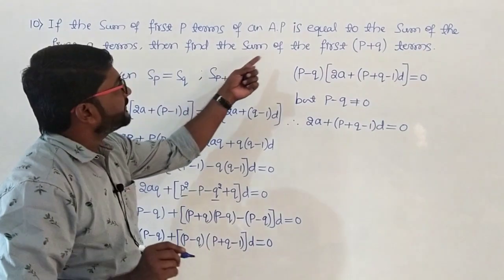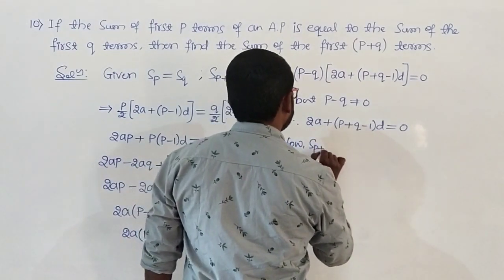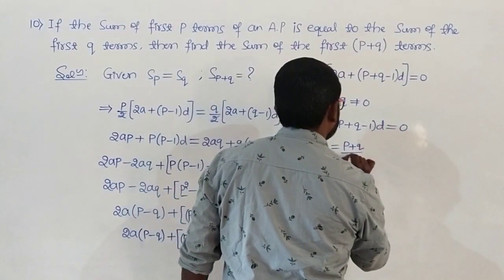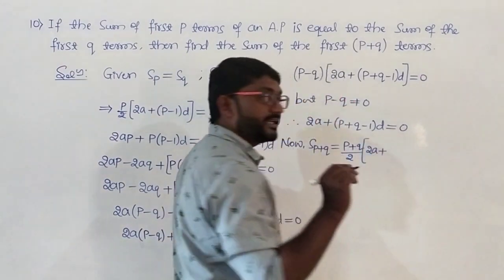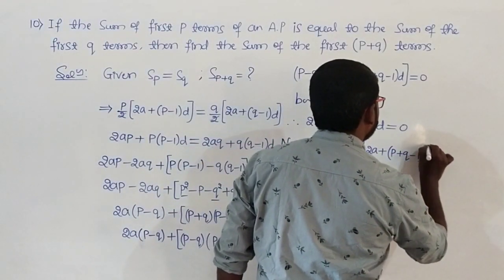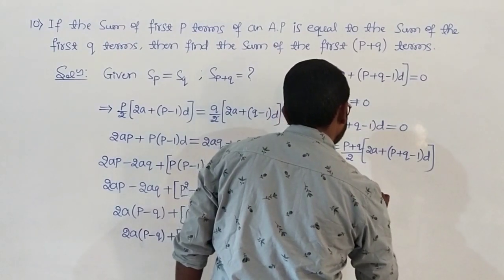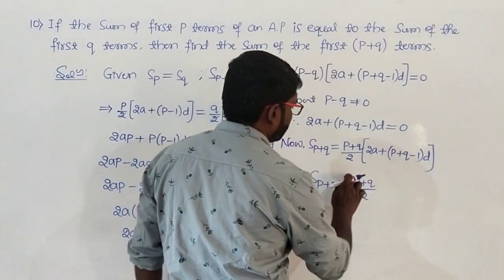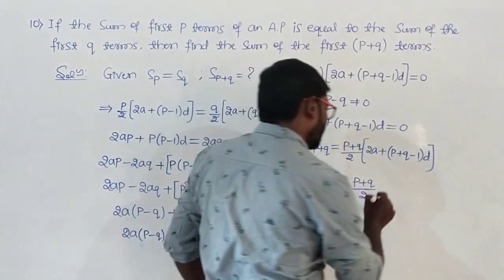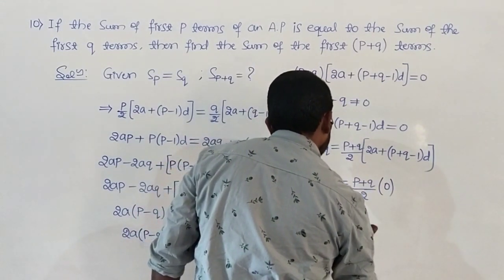Now we find the sum of the first p plus q terms. S of p plus q equals p plus q divided by 2 into 2a plus p plus q minus 1 into d. But 2a plus p plus q minus 1 into d is nothing but 0, and 0 into anything is always 0. Therefore S of p plus q equals 0.